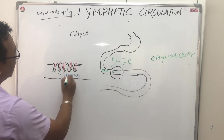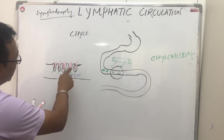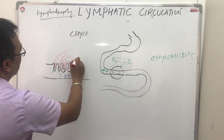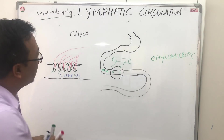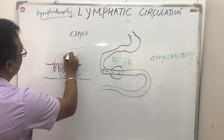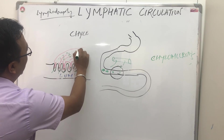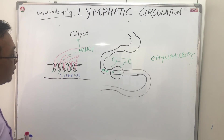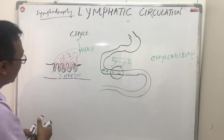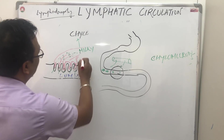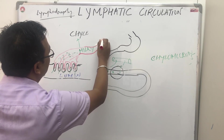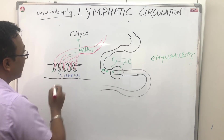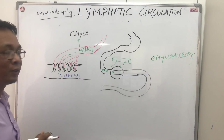Chylomicrons are absorbed into the lymphatic circulation. Because of the large amount of fats present, the whole fluid becomes milky in color — this is what we call chyle. This chyle, collected from the intestine, contains fats, chylomicrons, and cholesterols.